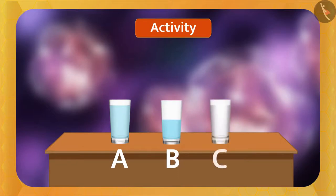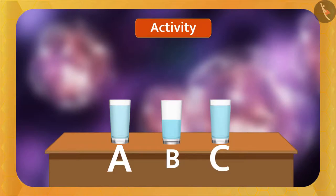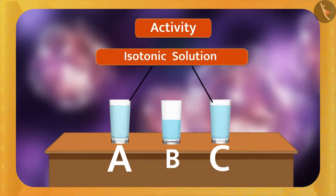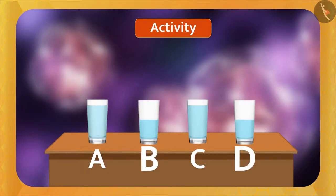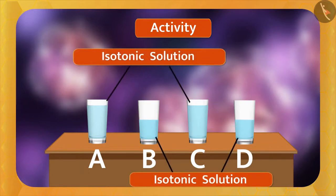Now take another glass C. Add the same amount of water and sugar or salt as you have taken in glass A. If both glasses A and C are compared, the concentration of water in both will be the same. So both solutions will be called isotonic solutions to each other. Similarly, take another glass D in which we keep the amount of water and quantity of sugar or salt as glass B. When glass B and glass D are compared, the concentration of water in both will be the same — both glass B and glass D will also be called isotonic solutions to each other.